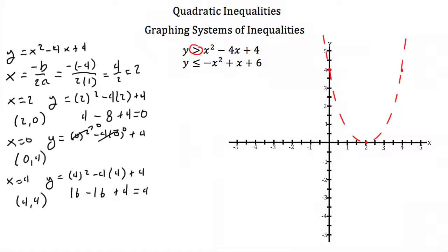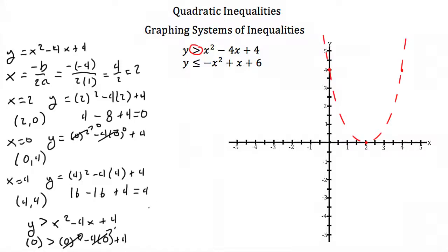Our last step is to test a point on either side. I'll choose the origin. Plugging in 0 for y and x: 0 has to be greater than 0 squared minus 4 times 0 plus 4, giving 0 greater than 4. That's false, so the origin is not a valid point. Since the origin is outside the parabola, all points inside the parabola are valid solutions for this inequality, so we shade everything inside the parabola.